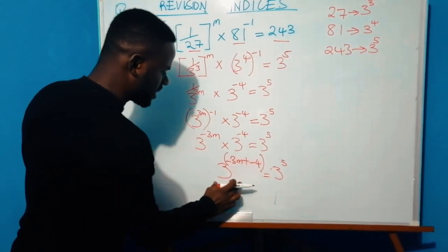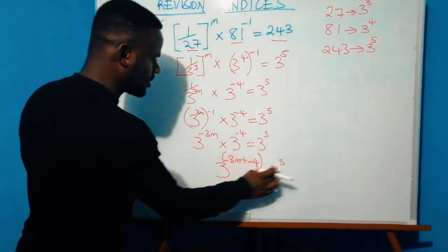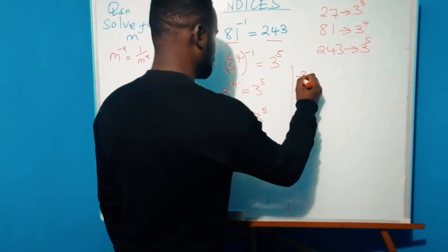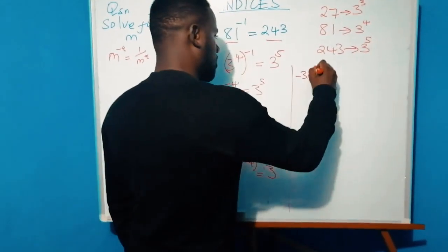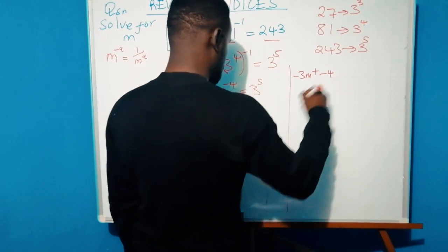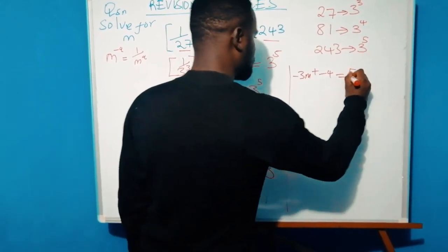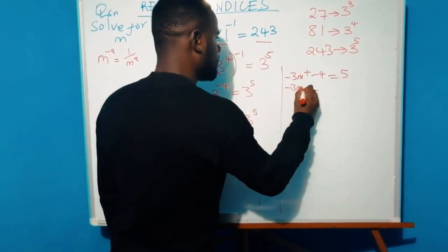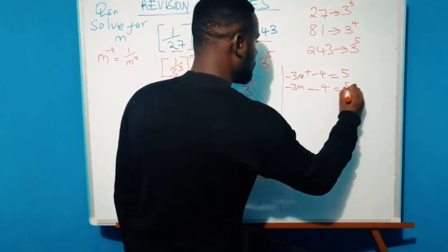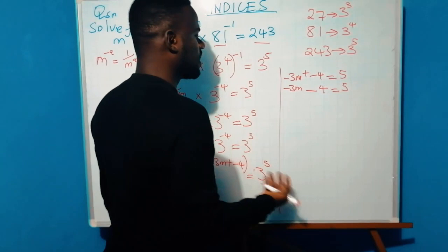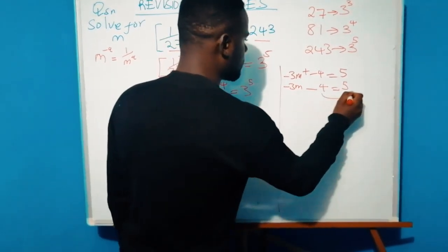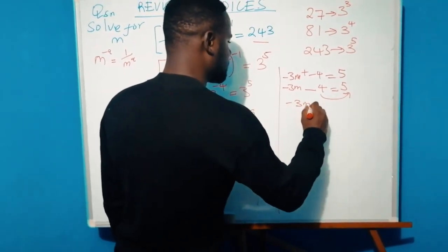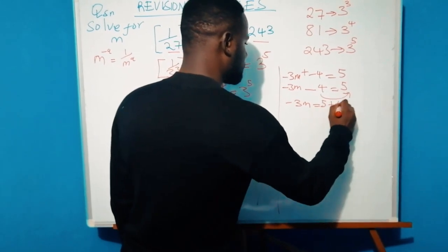Since all the bases are the same, the powers must be equivalent. So we can write: negative 3m plus negative 4 equals 5. A positive times a negative gives a negative, so this becomes negative 3m minus 4 equals 5. Collecting unknowns on one side, negative 4 crosses over and becomes positive 4: negative 3m equals 5 plus 4.